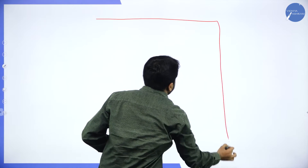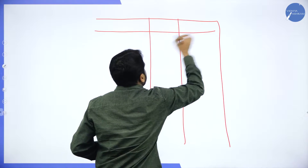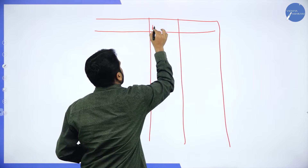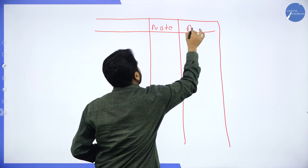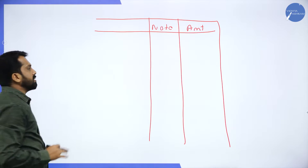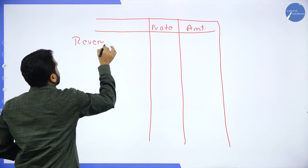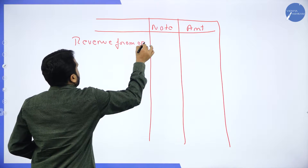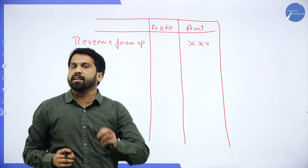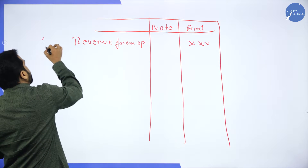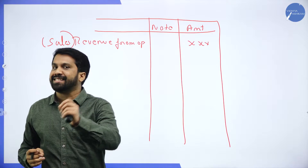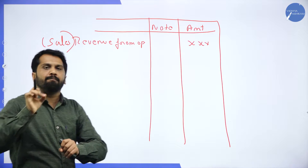What is your format? Under 'Particular' we write all the wordings. The second column is 'Note', and the last column is 'Amount'. The first item is Revenue from Operations. What is the other name for Revenue from Operations? The other name is Sales — remember this. In some question papers, they will give you Sales. Sales and Revenue from Operations are both the same.